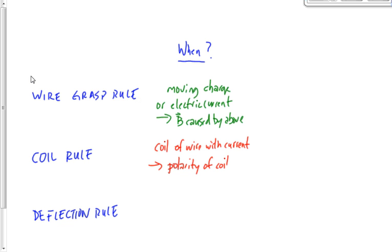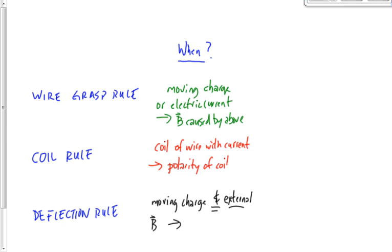The third rule, the deflection rule, applies when we have a moving charge and, for the first time, an external magnetic field — two magnets, one magnet, the Earth, an electromagnet, anything causing a magnetic field that is not the moving charge itself. We have a moving charge and an external magnetic field, and what we want to do is find the magnetic force. So for the first time we're dealing with an external magnetic field and a magnetic force.